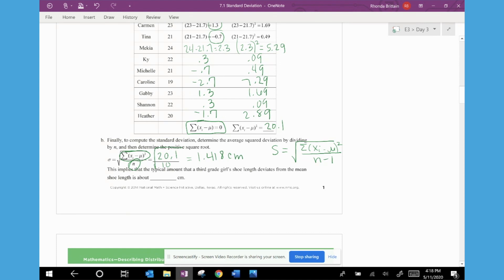If I fill in the blank for the rest of B, it says this implies that the typical amount that a third grade girl's shoe length deviates from the mean shoe length is about 1.418 centimeters.